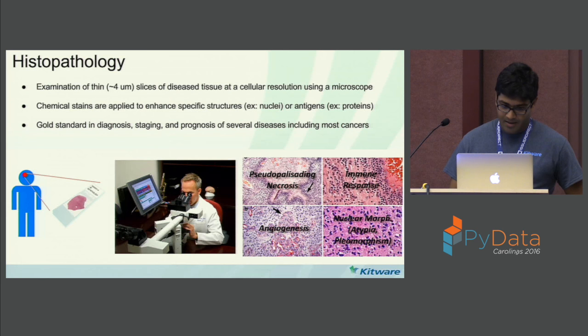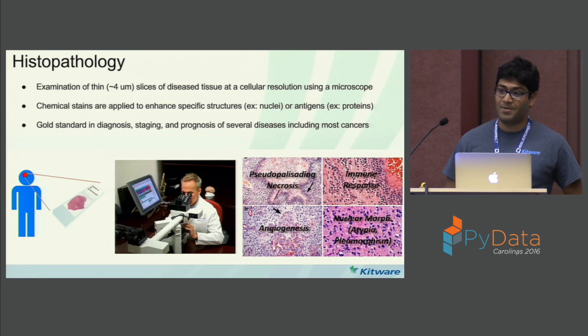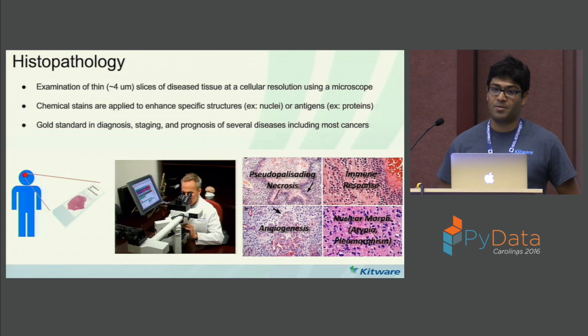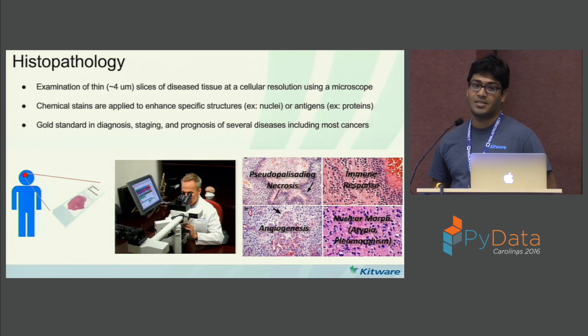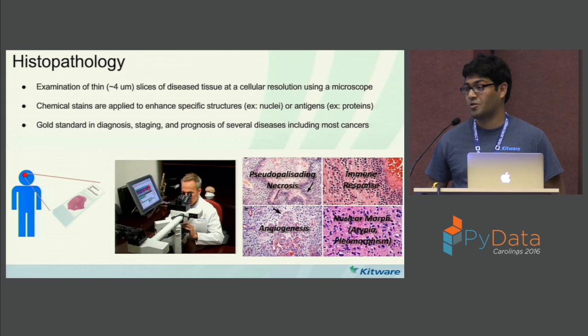Before I start with HistomicsTK, I would like to introduce you to histopathology. What is histopathology? It is about examining thin slices of diseased tissue that are fixed on glass slides. You put them under a microscope and look at them at cellular resolution. You usually apply chemical stains to them — color dyes that highlight specific structures in these images, for example nuclei, cytoplasm, or other structures or proteins that you are interested in.